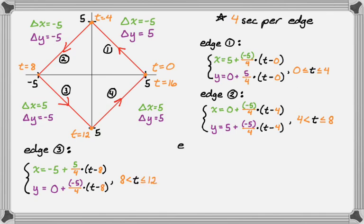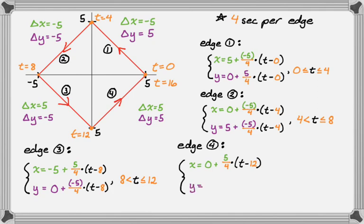For the final edge, x equals 0 + (5/4)(t − 12), since we hit this edge at t equals twelve. y equals −5 + (5/4)(t − 12). For the time interval, t equals twelve was already included, so we use 12 < t < 16, because at t equals sixteen we're back where we started and don't want to duplicate that point.